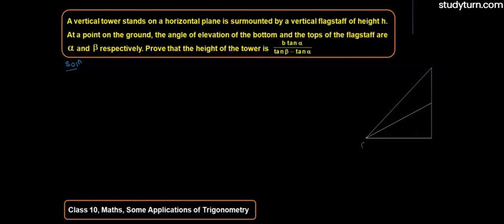So, firstly let's complete this diagram. This is O, A, B and C. This is angle alpha and this is angle beta and the height will be h.